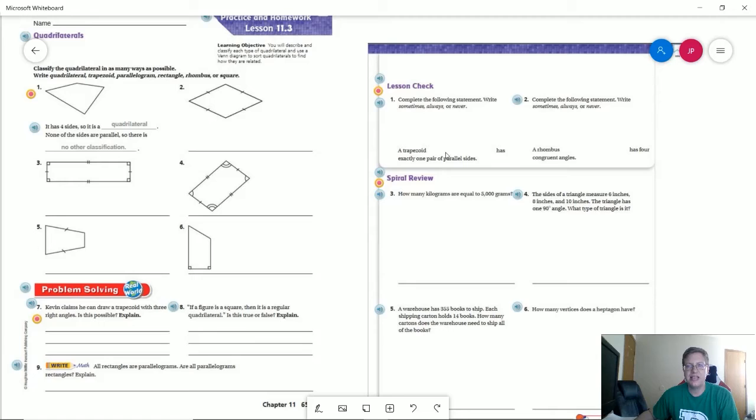We talked about during the lesson about our kind of flow chart or cheat sheet that tells how many pairs of parallel sides we have. So that one should be really easy. Let's take a look at number two.